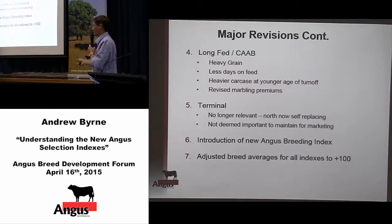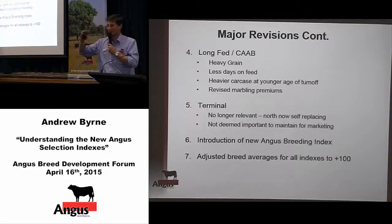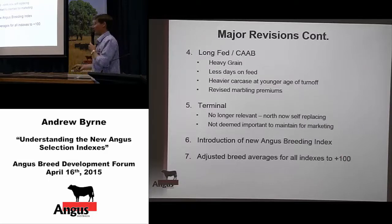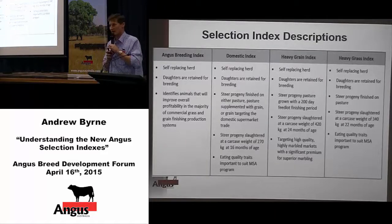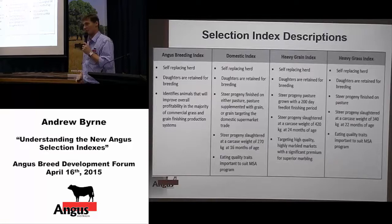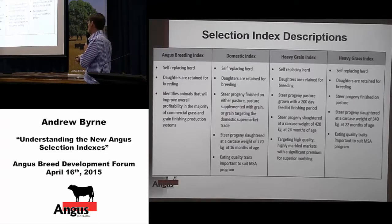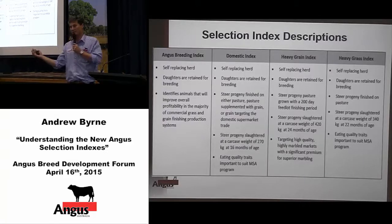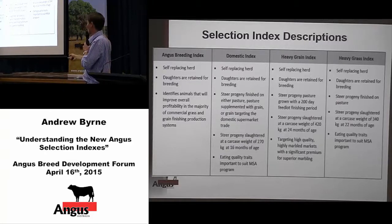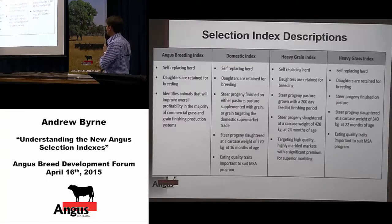Starting with the desire of 100, as you will have seen from the different monthly rulings, it's bouncing around a little bit either side, but the aim is to have that around 100 — at least have a constant breed average. So those were the major revisions. The new indexes we now have: the three indexes specific to a particular production system and market endpoint, and the Angus Breeding Index, which is this all-purpose or general-purpose index, aiming to identify animals that will improve overall profitability in the majority of production systems.